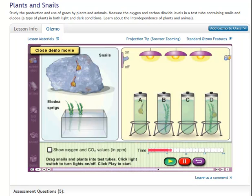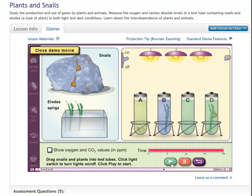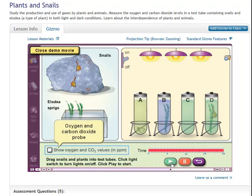As the experiment runs, watch the BTB in the tubes change color. The gizmo simulates 24 hours. After it's over, you'll see how much the BTB changed color. To measure the oxygen and carbon dioxide in the tubes,